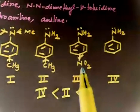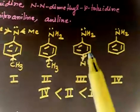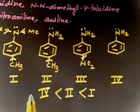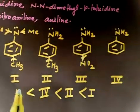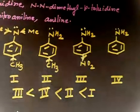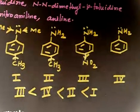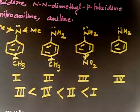The least basic is compound three, para-nitroaniline, because it will pull off the electron density through resonance. So compound three is the least basic. Let us discuss the next problem.